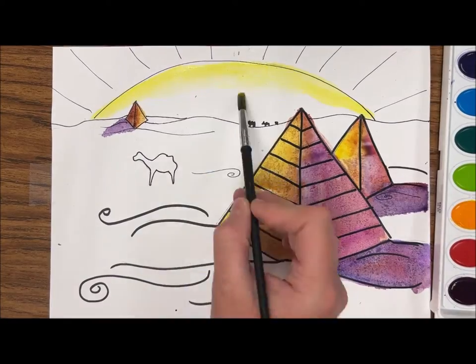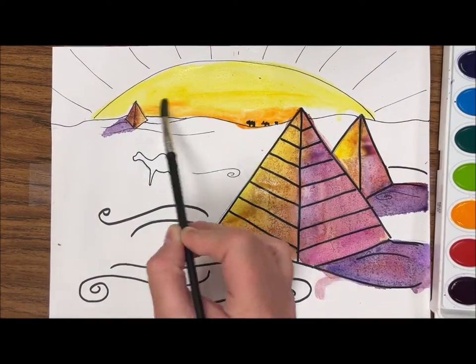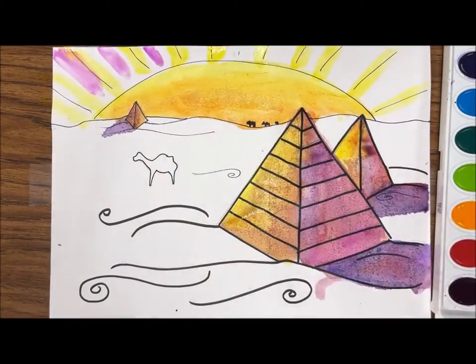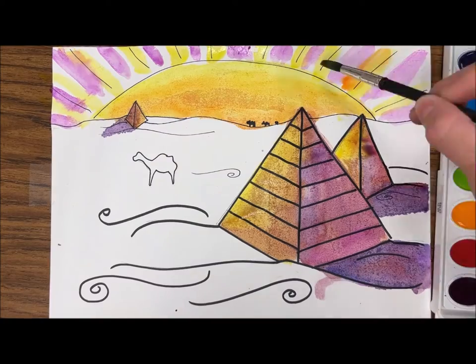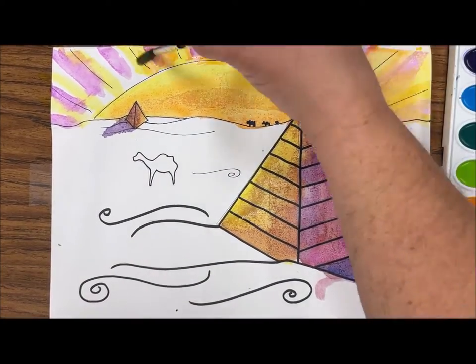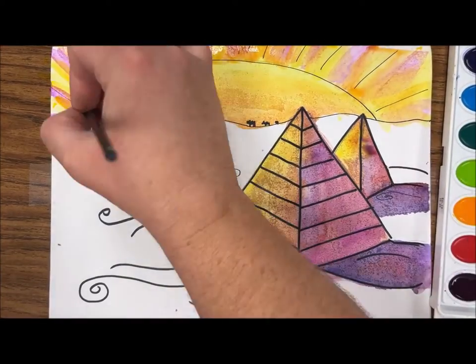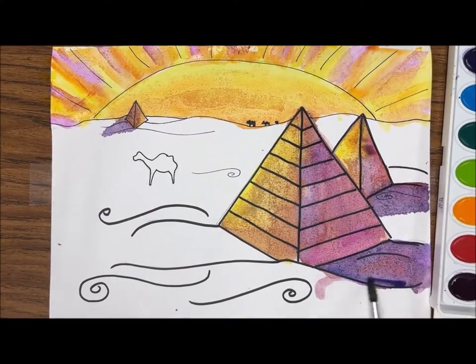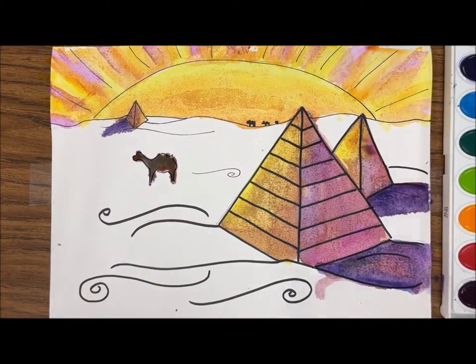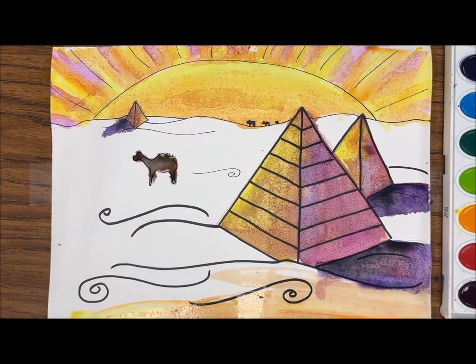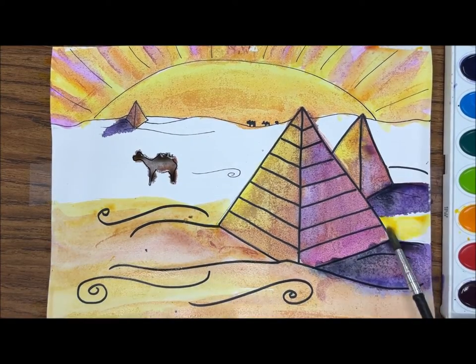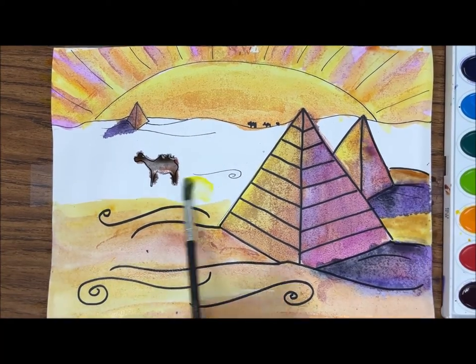Then I'll fill in the rest of my sunset and landscape, mixing and layering colors as I go. I've chosen a color scheme of mostly purple and yellow, which are complementary colors because they are across from each other on the color wheel. Also, because they're complementary colors, when they mix together they make brown. This brown helps me to get that golden look in my desert.